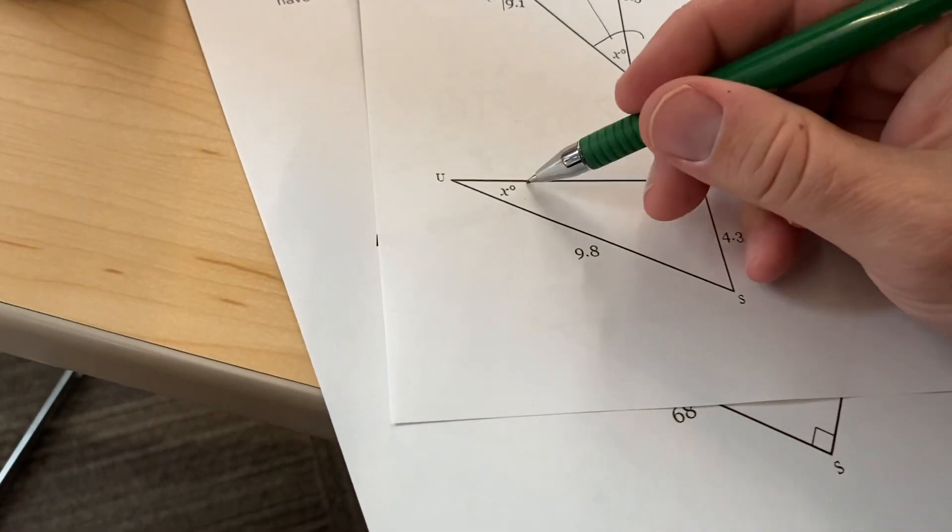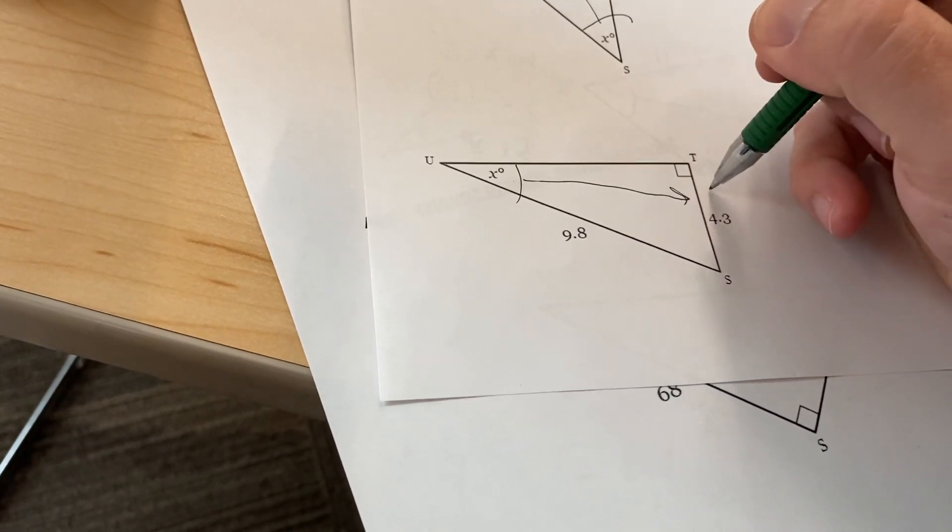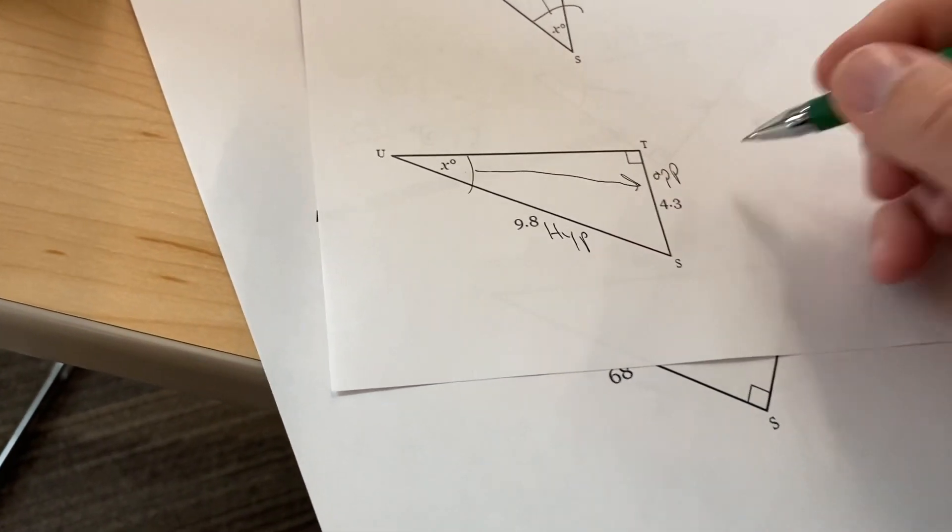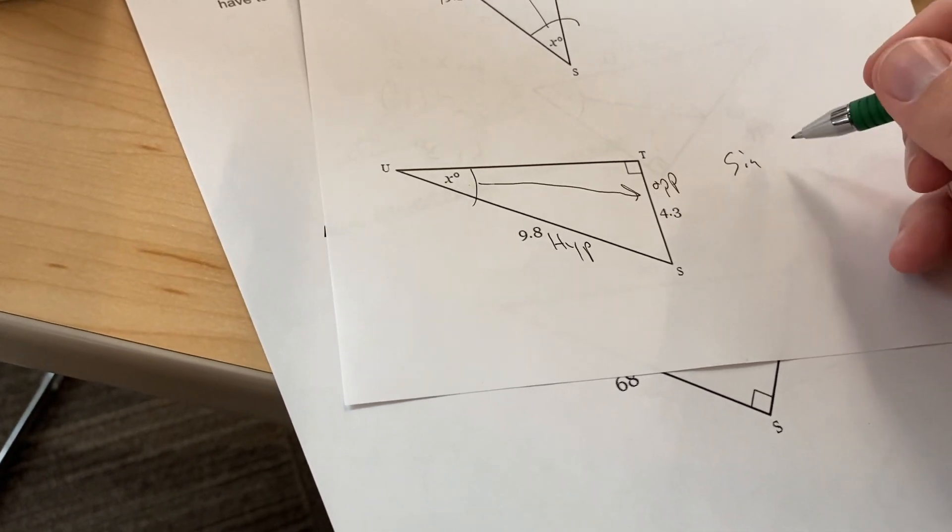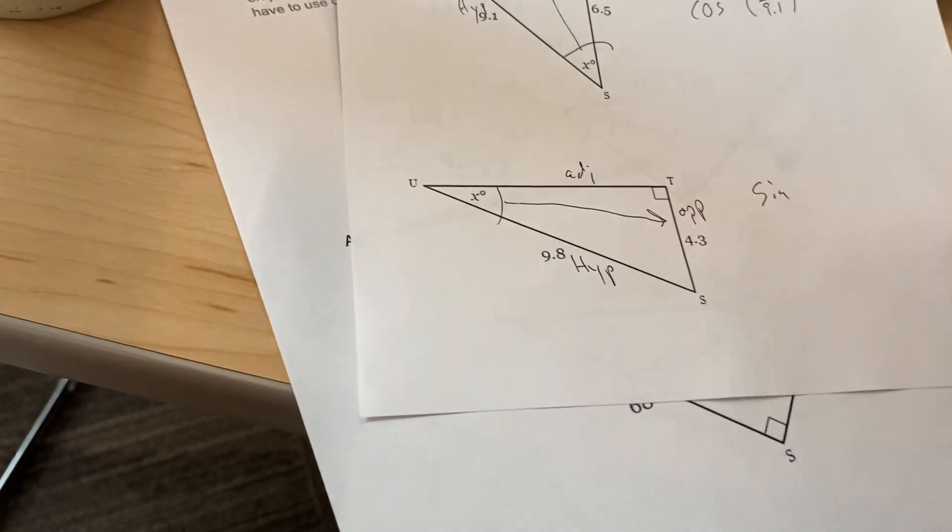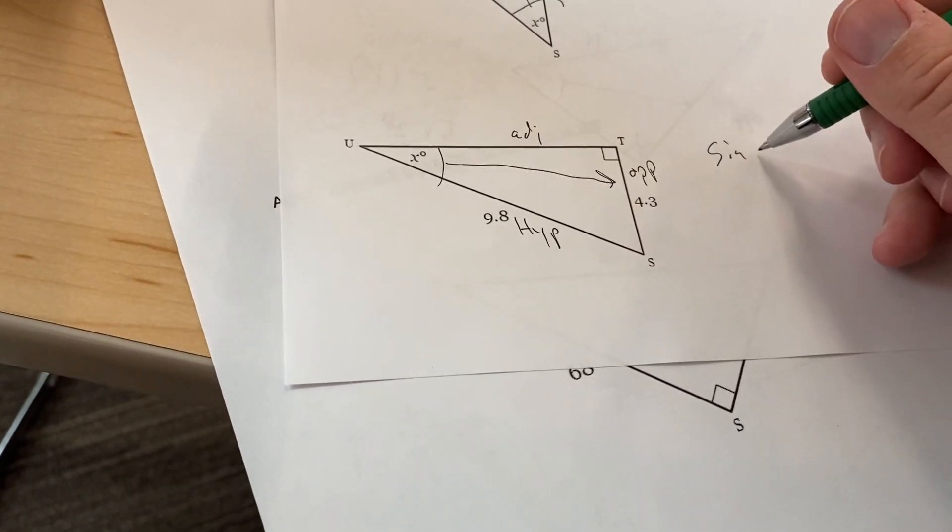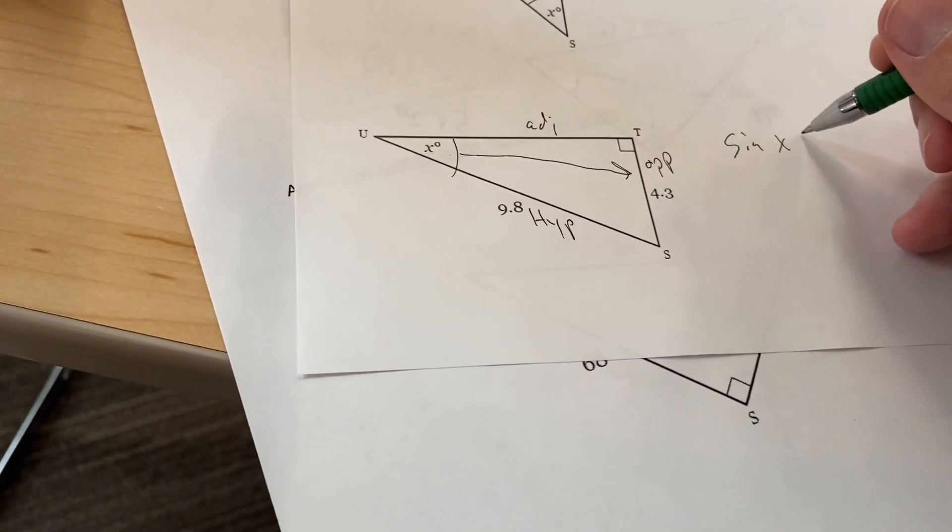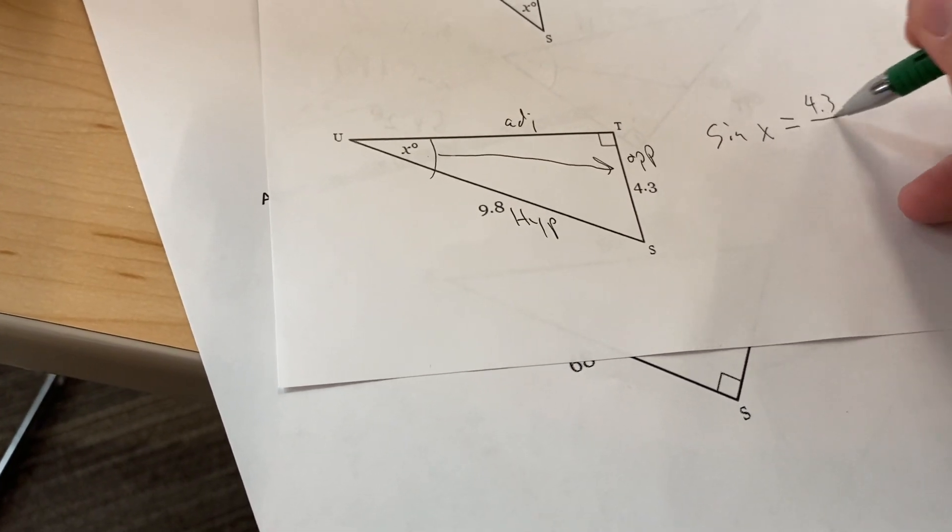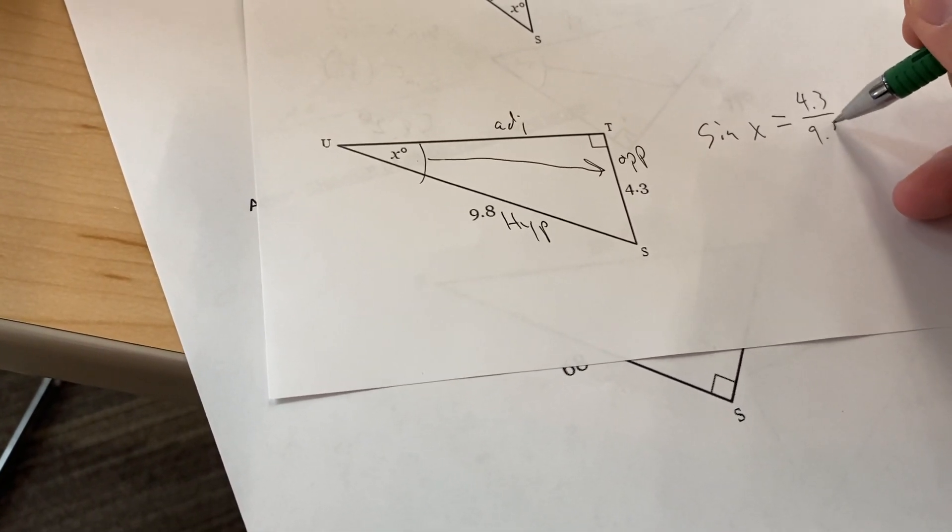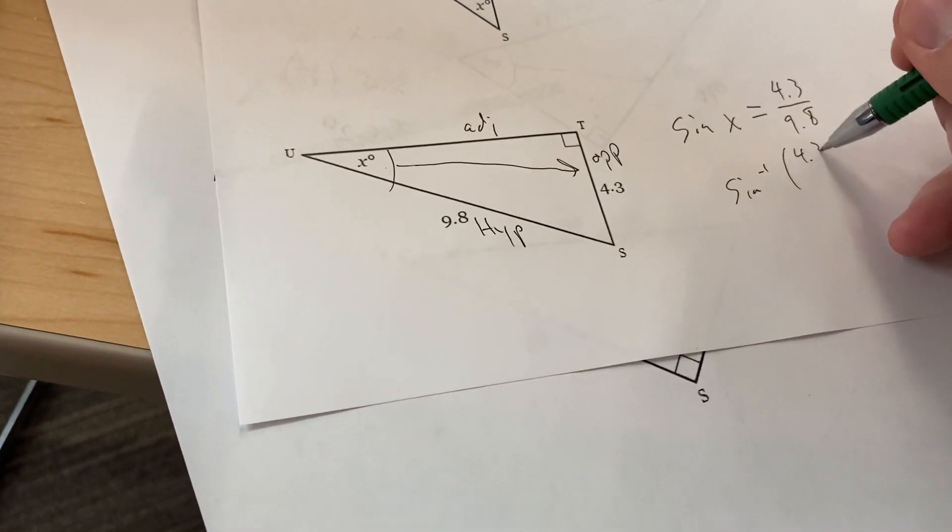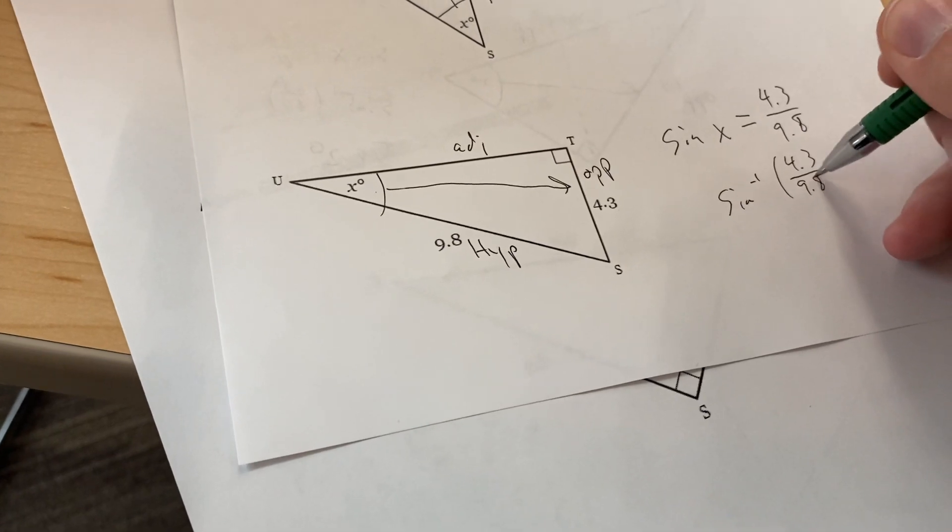Then the last one here. I've got my opposite side and this is my hypotenuse, so this is going to be sine. I don't have that adjacent side - there's nothing there for me to work with. So the sine of my angle that I don't know is going to be equal to my opposite side of 4.3 over my hypotenuse of 9.8. This means I'm going to use the inverse sine of 4.3 over 9.8.